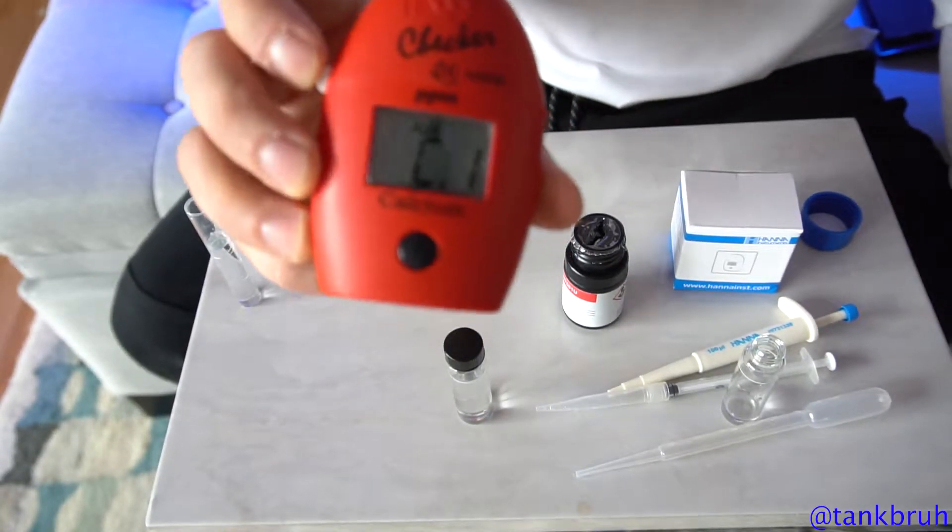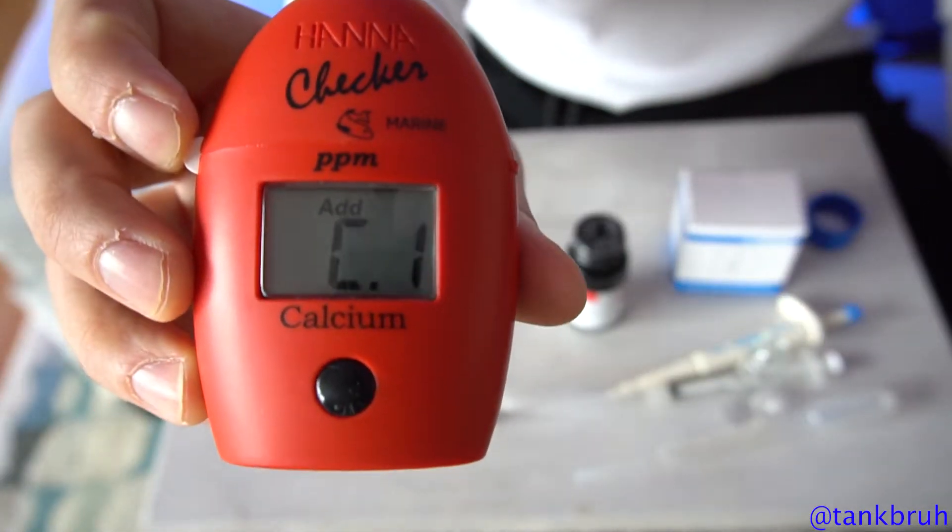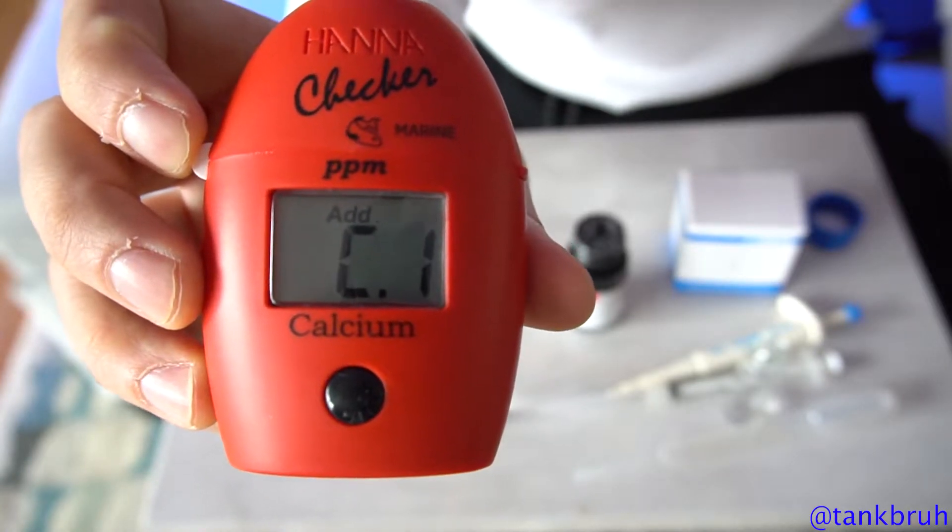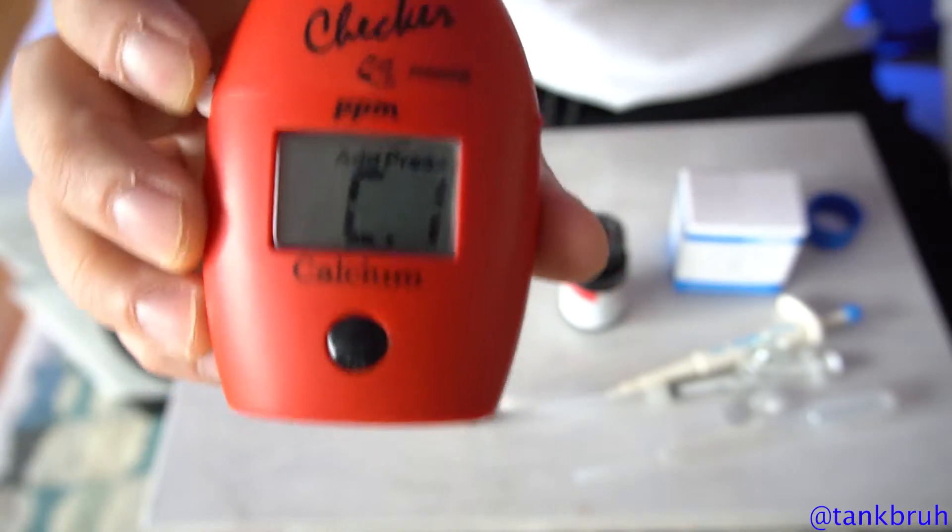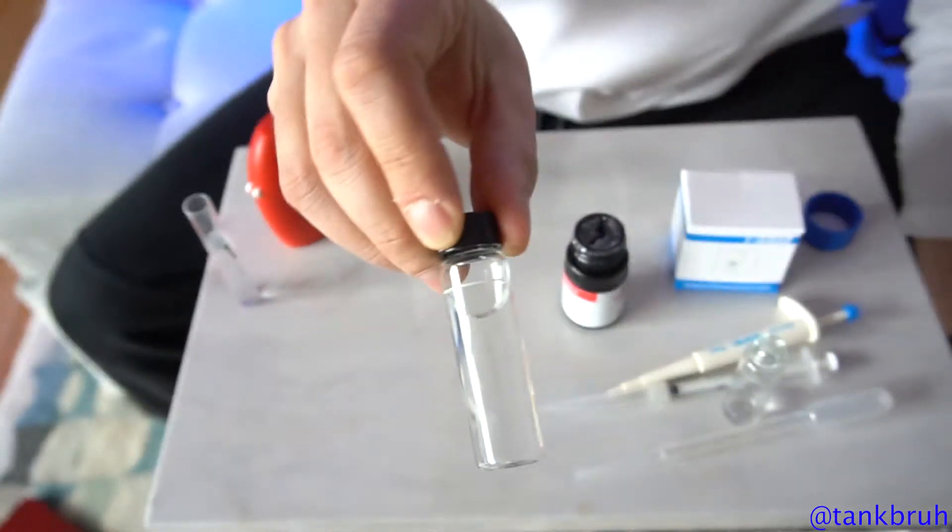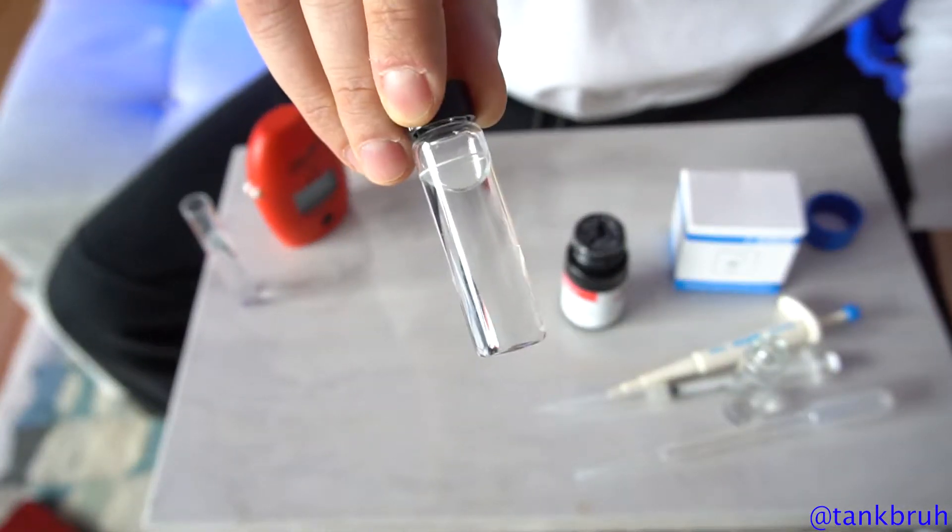Now once you fire up your Hanna checker, you're gonna see something that says C1, add press, it says. So once it's fired up, that means it's ready for the test tube to be put in.